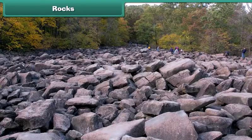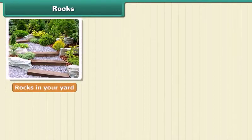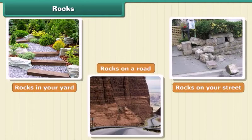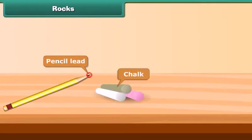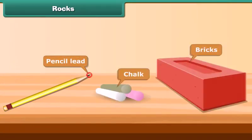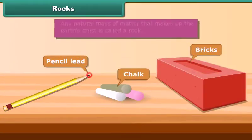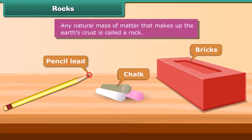Rocks are all around us. You can see rocks in your yard, on your street, on a road, everywhere you look. Pencil lead, chalk, and bricks are all rocks. Any natural mass of matter that makes up the earth's crust is called a rock.